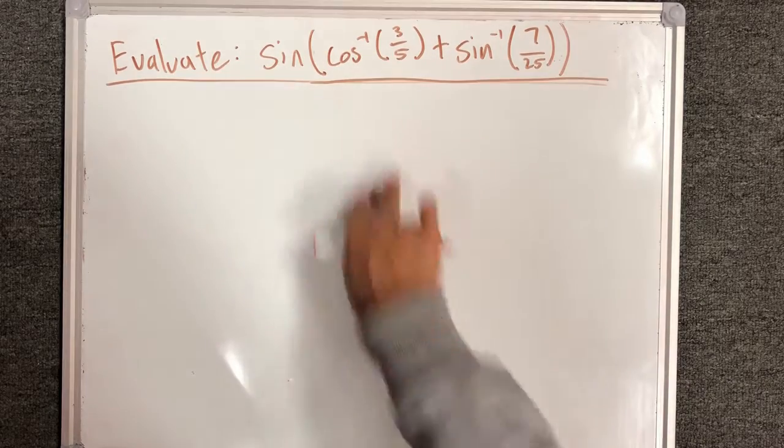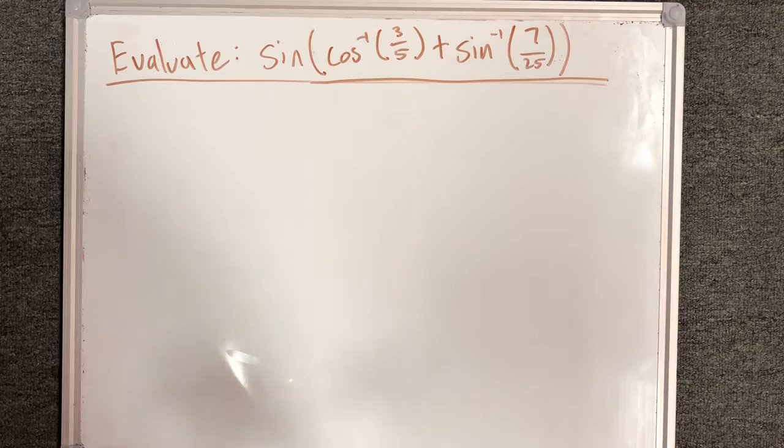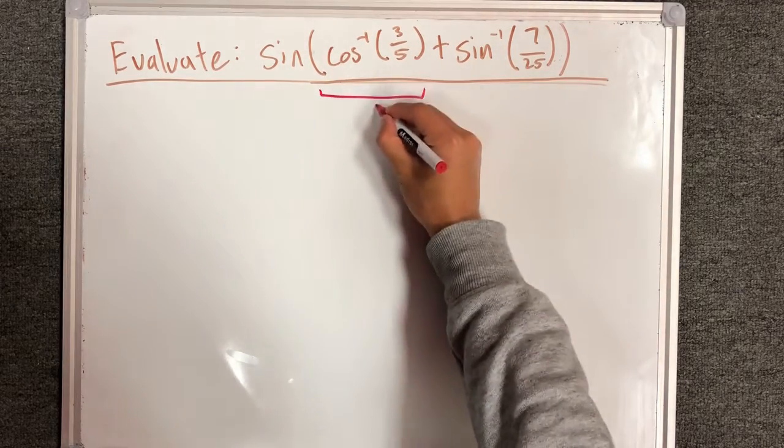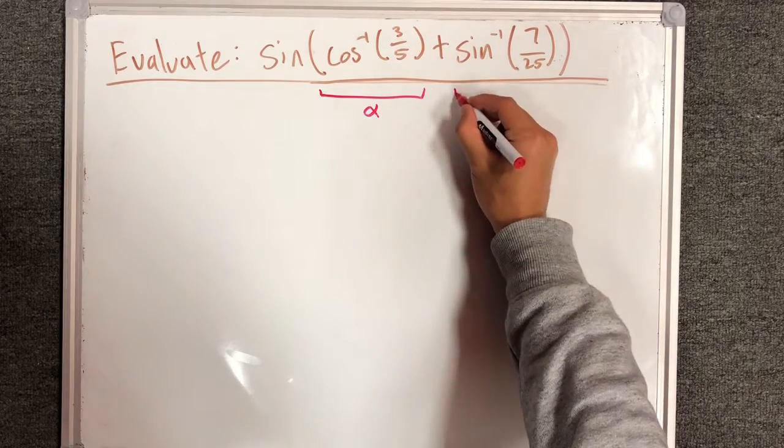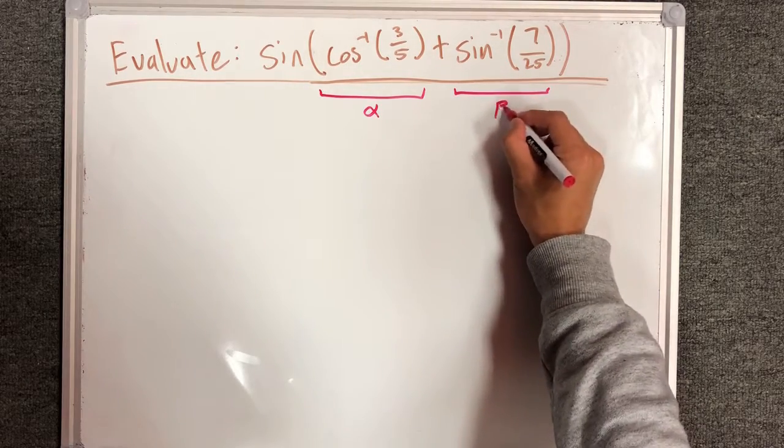We realize that cosine inverse of a ratio will always give us an angle. So let's call this part alpha. Let's call this part beta.